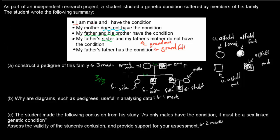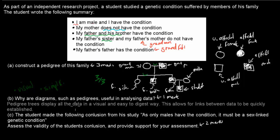Why do we use these diagrams instead of just looking at the text information? The pedigree tree is a visual medium, so we can just look at it and it simplifies all the data. Those two things allow us to make links much more easily than if we only had text. Pedigree trees display all the data in a visual and easy-to-digest way, allowing links between data to be quickly established. That gets you the one mark.